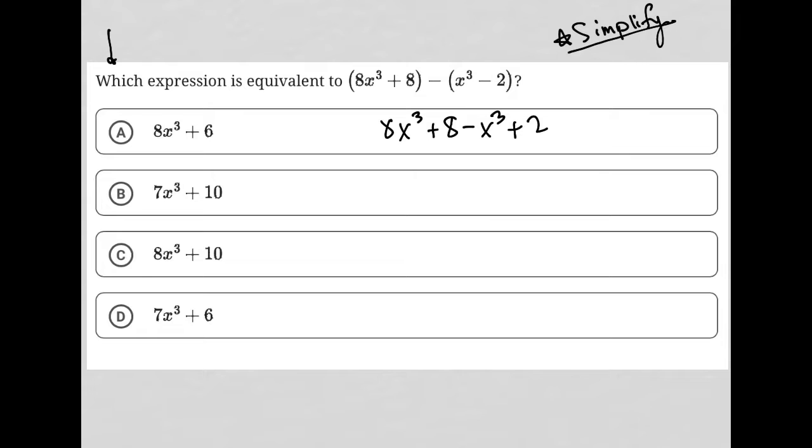So let's combine some like terms now. I have 8x³ - x³. Well, that's 7x³. I have a positive 8 + 2. Well, that's +10. So 7x³ + 10 is my answer.